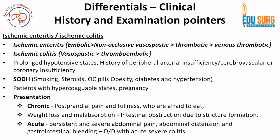Prolonged hypotensive states, history of peripheral arterial insufficiency, cerebrovascular or coronary insufficiency are all risk factors. A useful mnemonic: smoking, steroids, OC pills, obesity, diabetes and hypertension are all risk factors for pro-thrombotic states. Patients with hypercoagulable states such as Protein C deficiency, Protein S deficiency, Factor V Leiden — all these points also need to be covered in the history. Pregnant patients are also in a hypercoagulable state.